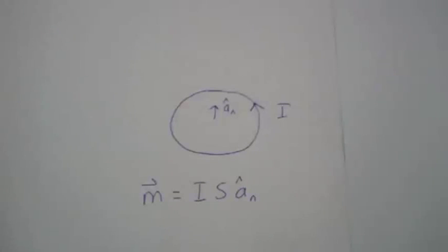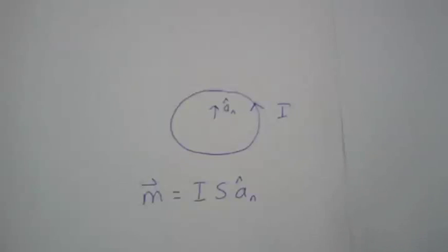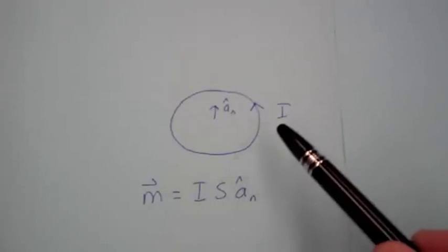I'm going to demonstrate a simple motor. If we have a loop of current, we define a magnetic dipole moment as the product of that current